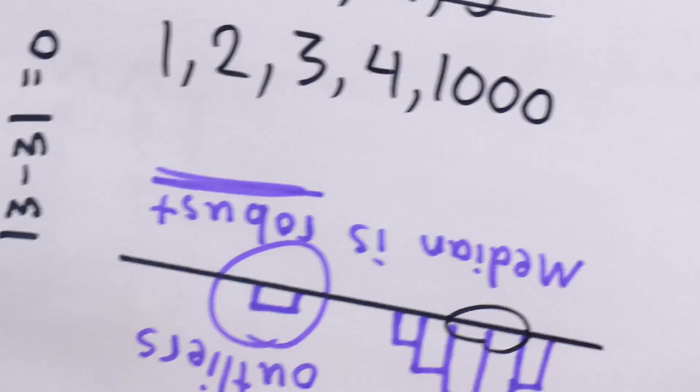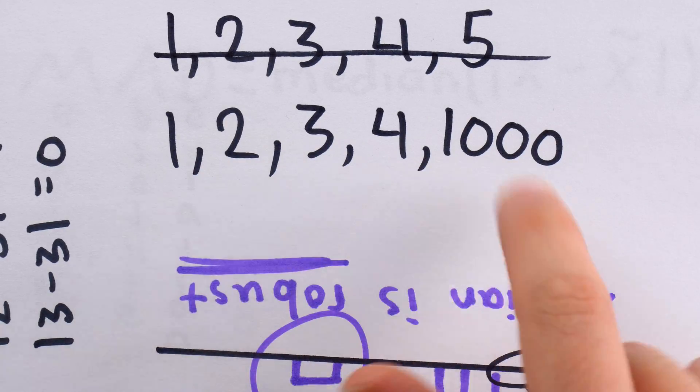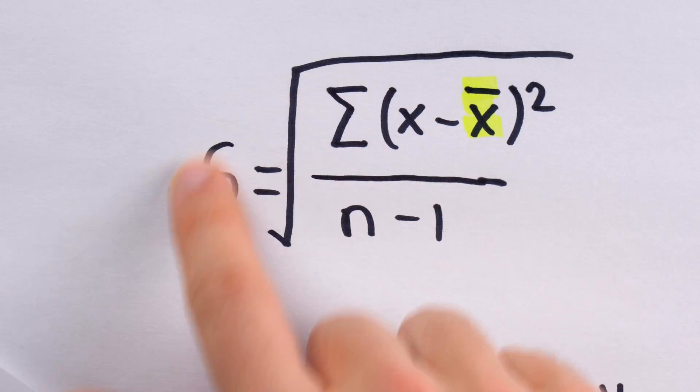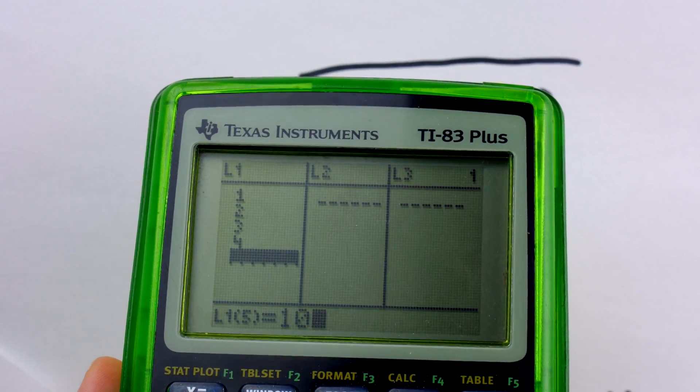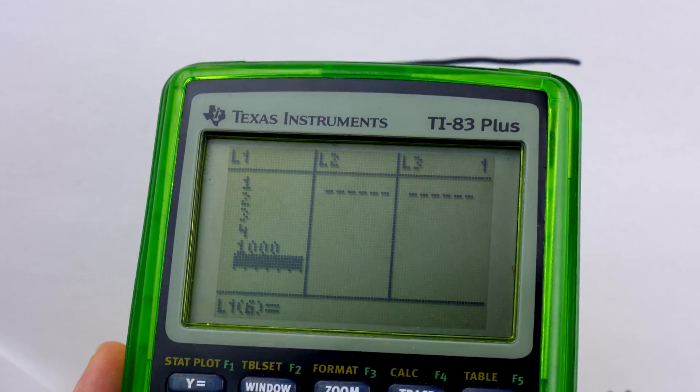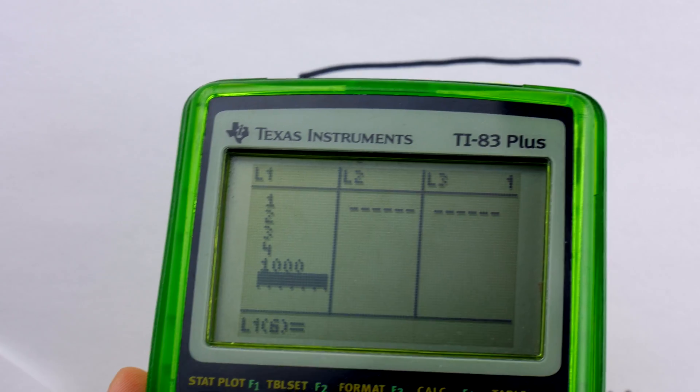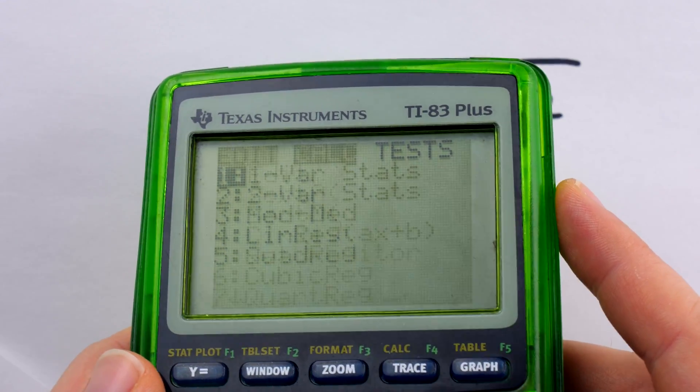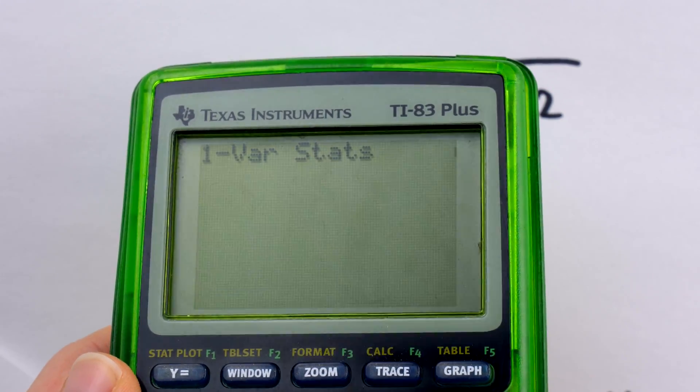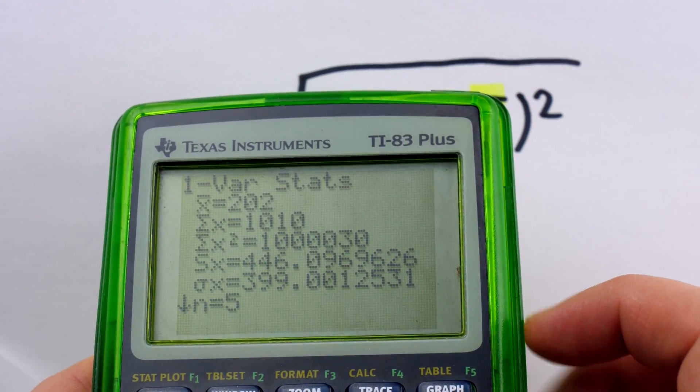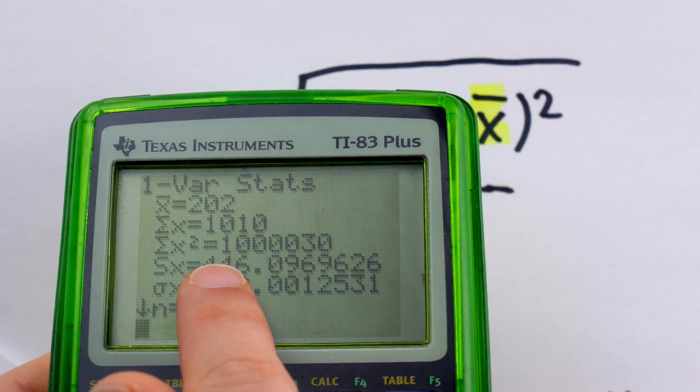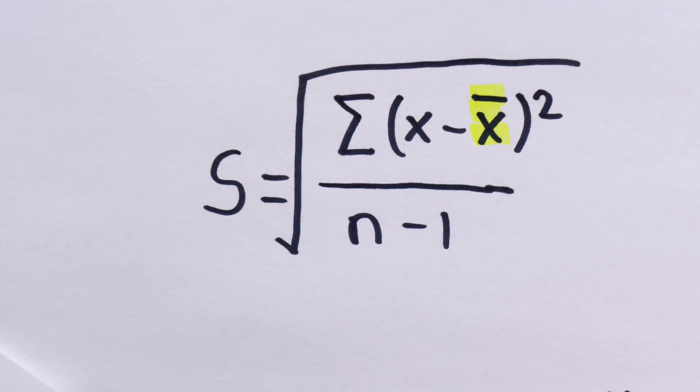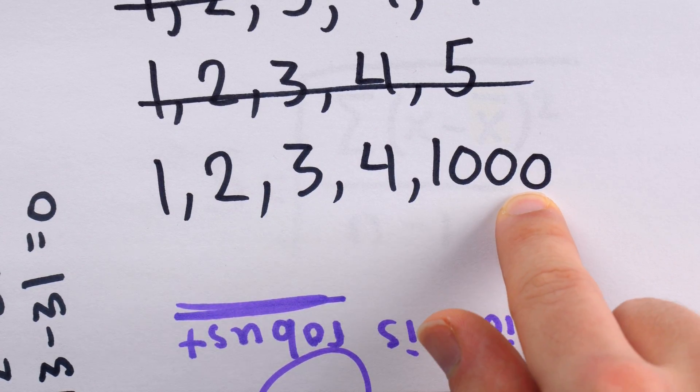Now, just like the mean of this data set was hugely changed by the 1,000, so too would the standard deviation of the data set. I can bust out my limited edition transparent green TI-83 Plus to show you this, because the calculations are a bit laborious. So, I've entered that data, 1, 2, 3, 4, 1,000, and then we can tell the calculator to calculate some statistics with that set of data. And what we find is that the standard deviation, Sx, is 446. It's huge, suggesting that there's a ton of variation in the data, when really, all of the data is close together, except for a single data point.